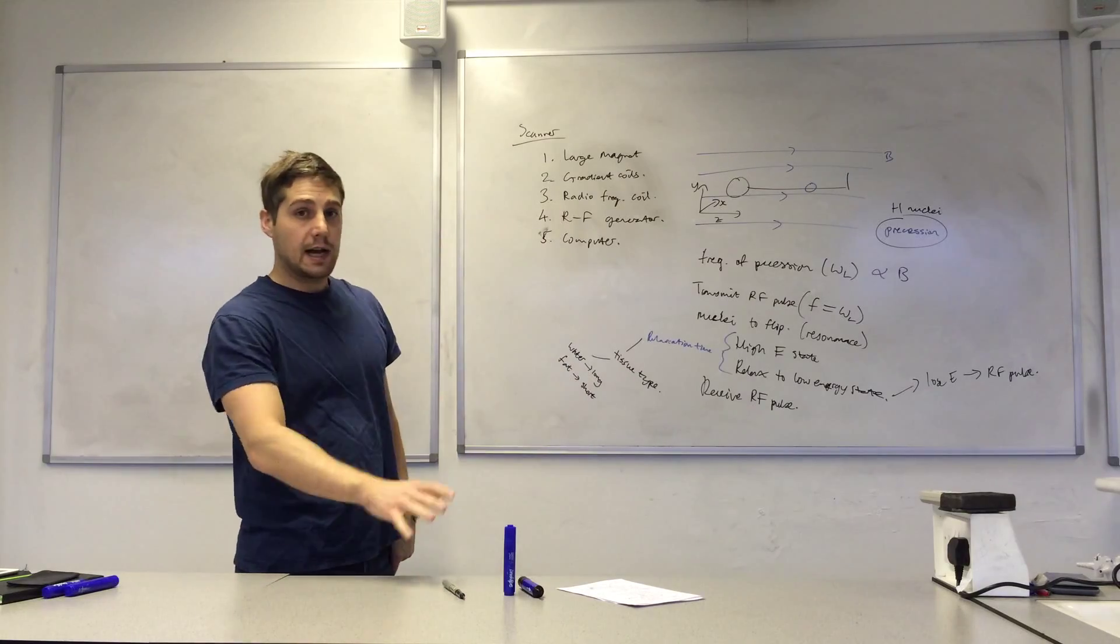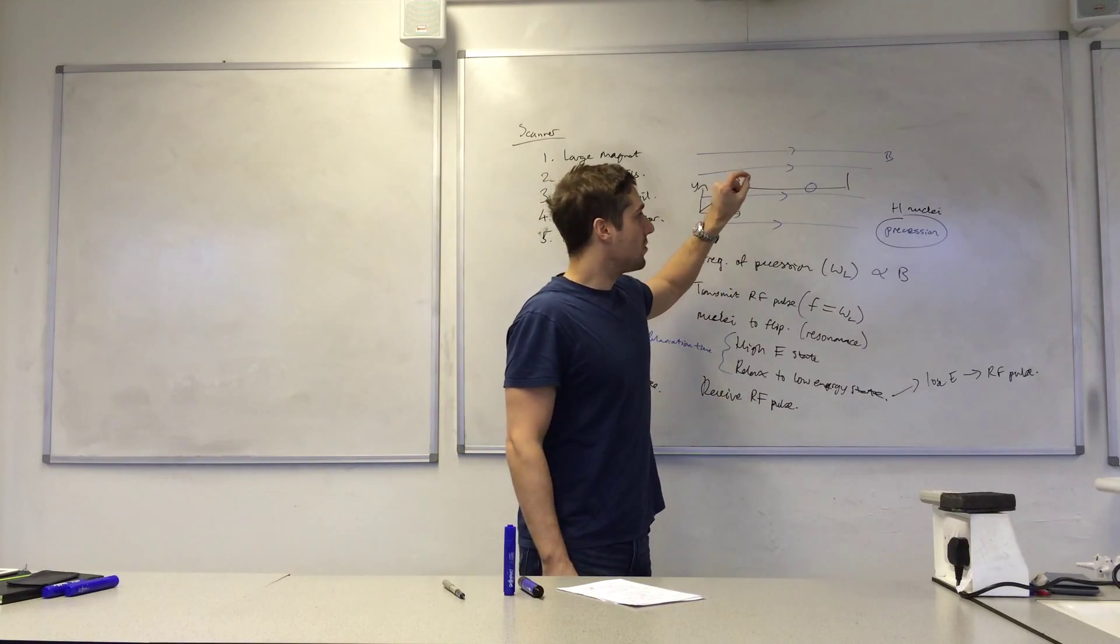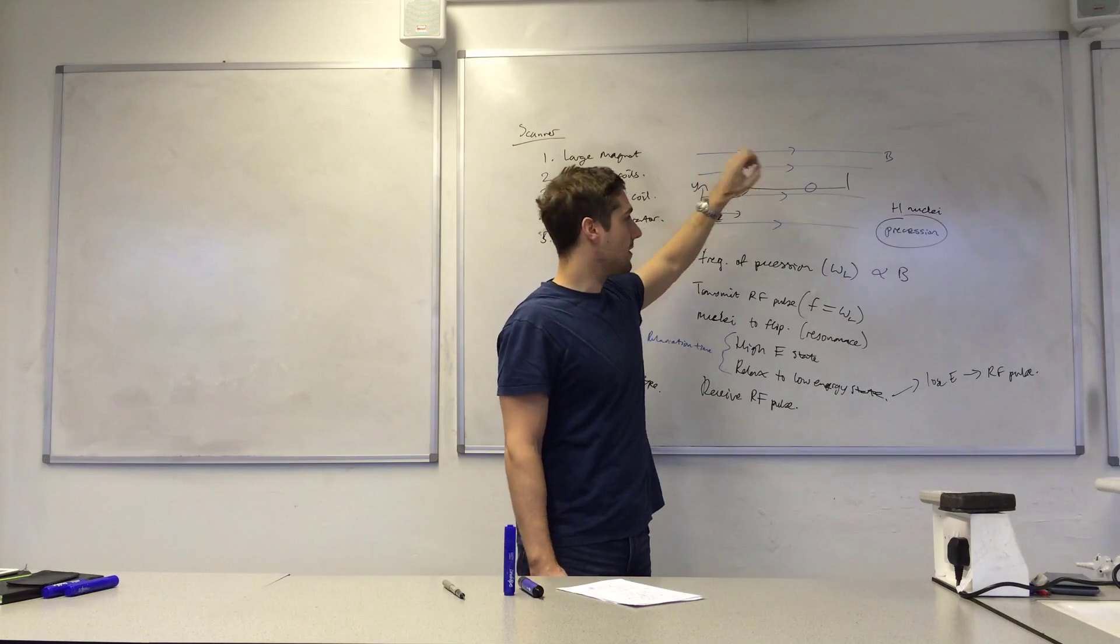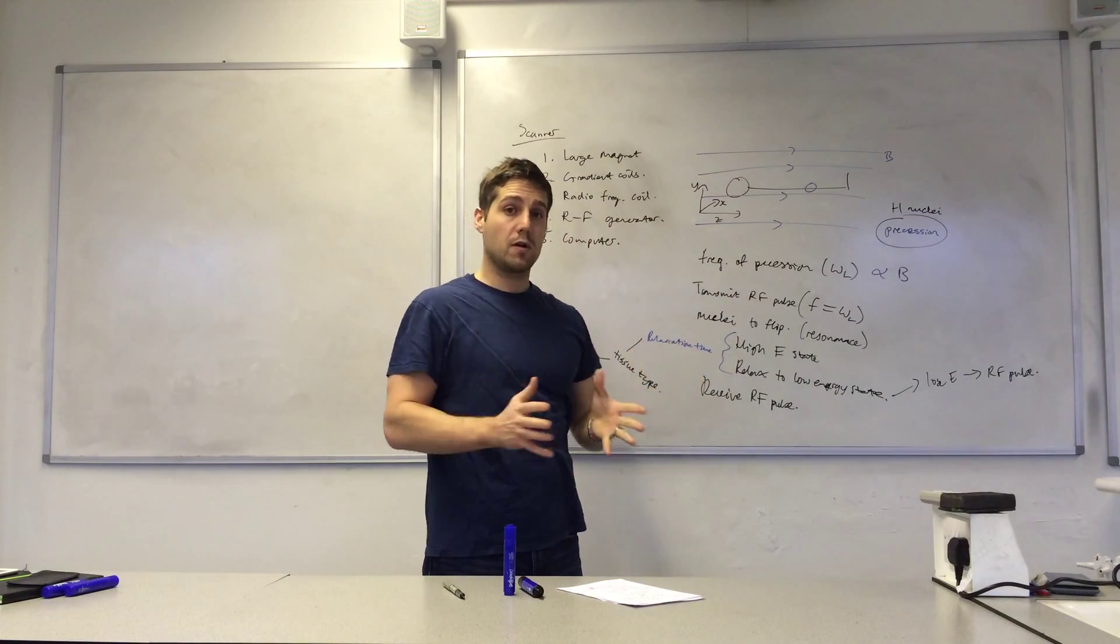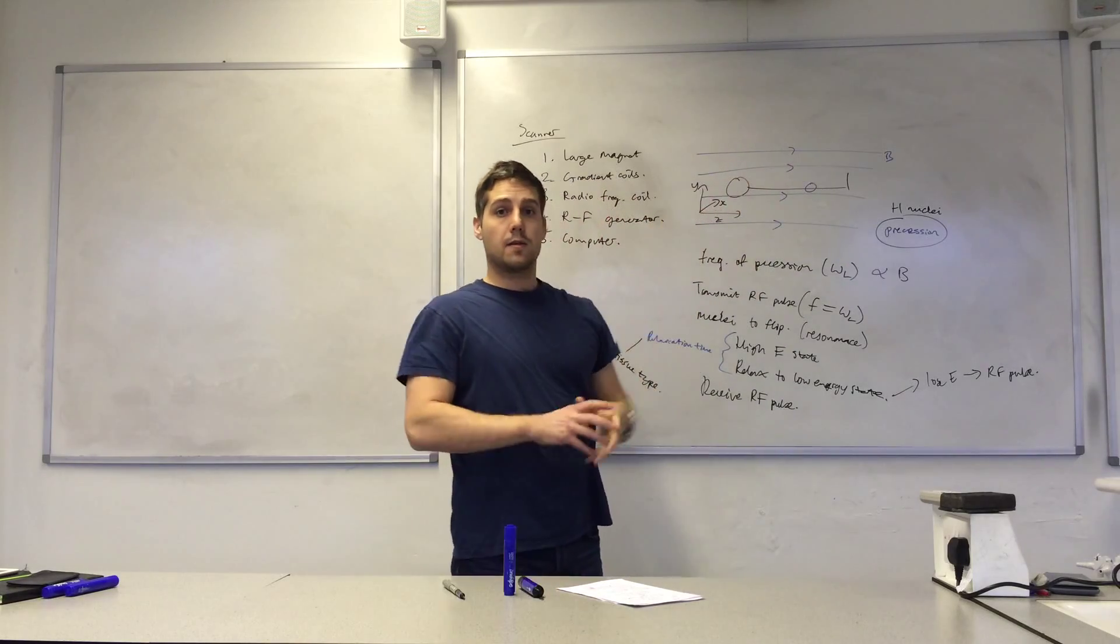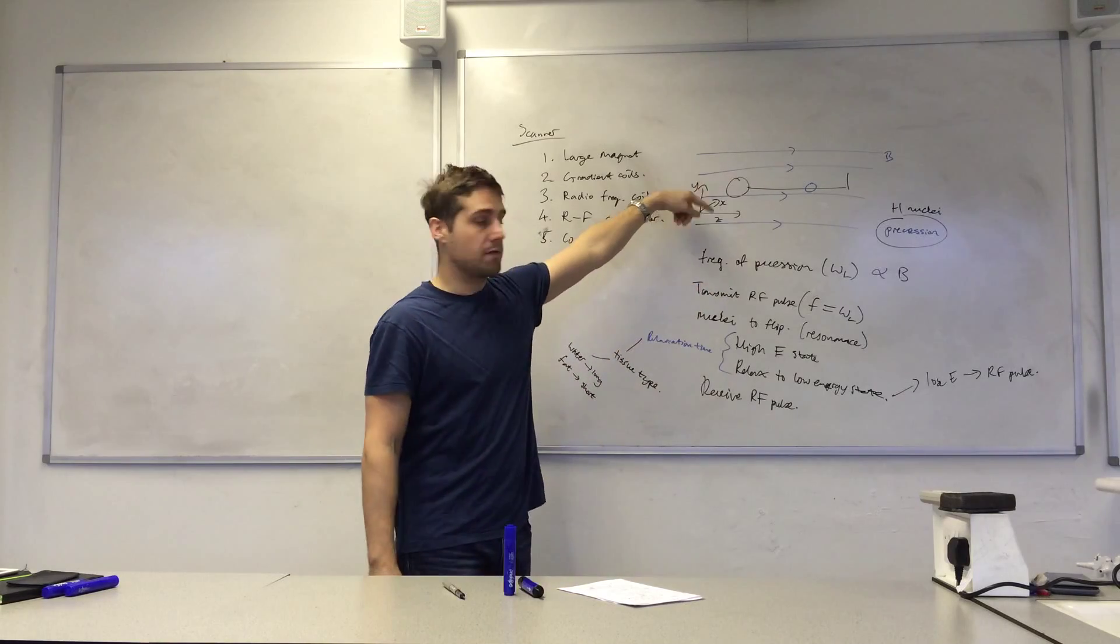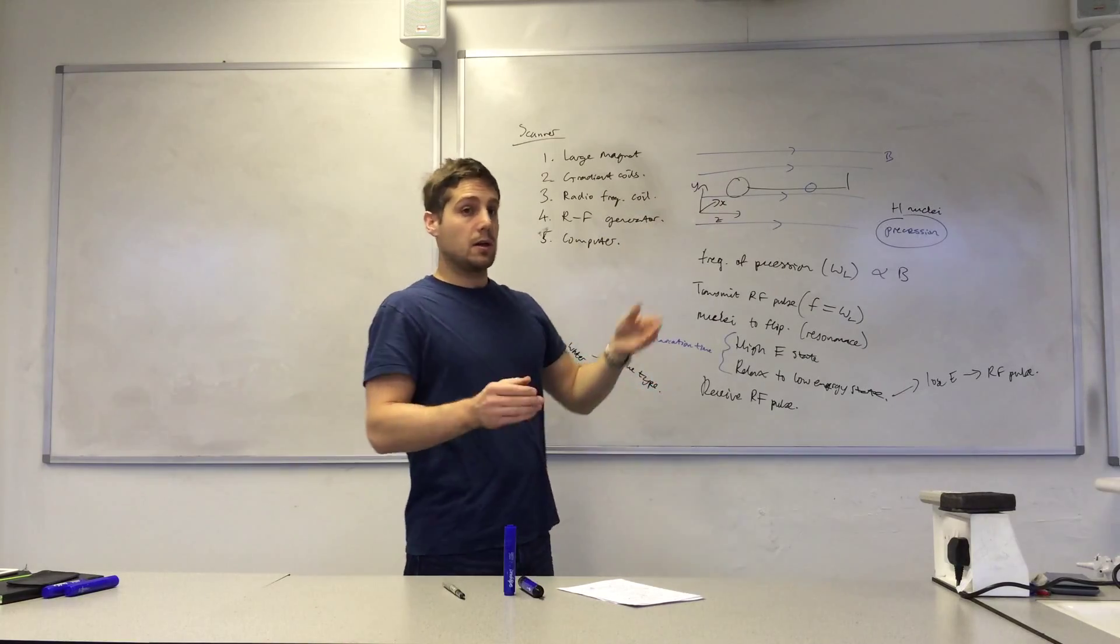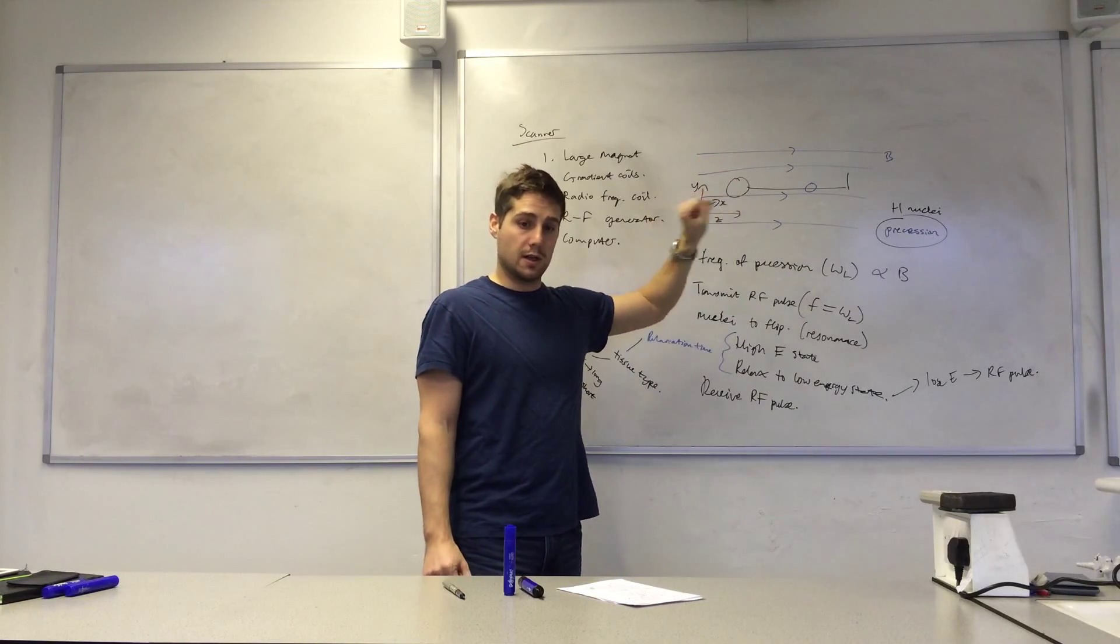The reason that an MRI scan takes a long time is because you have to scan tiny volumes of the body per scan. So each time you send and receive a signal, you're dealing with just a tiny volume of the body. And so to cover a large volume of the body, for the knee or the head, then it takes a long time to send and receive the information multiple times to cover all the tiny volumes of the body. And if you were to do a whole body scan, it would take a long time. So usually radiographers will just home in on the part of the body the doctor is interested in.